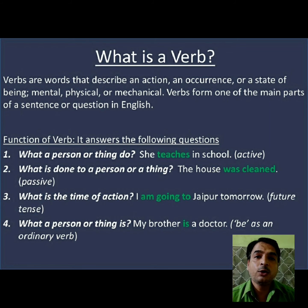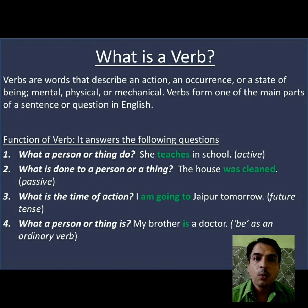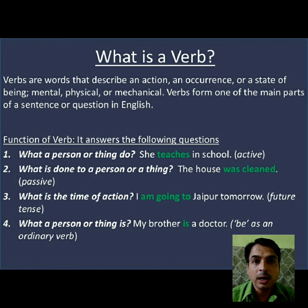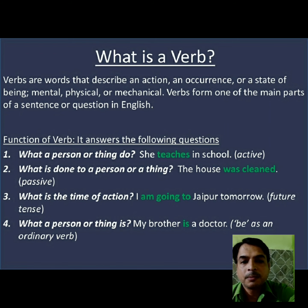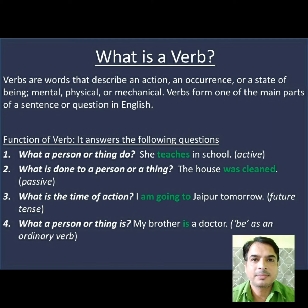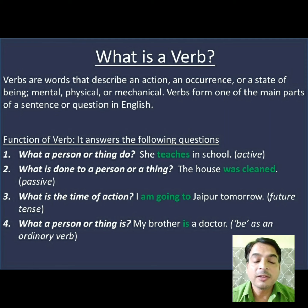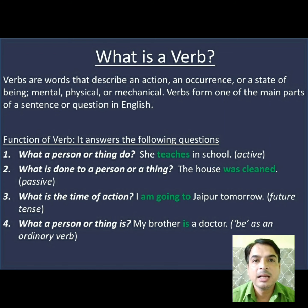Now let's look at the functions of a verb in a sentence. Understanding the functions of the verb will help us learn and use these things very effectively. The first function of the verb is that it tells us what a person is doing — that means in a sentence, we use verbs to tell us what is being done by the subject, which we do in active voice sentences.